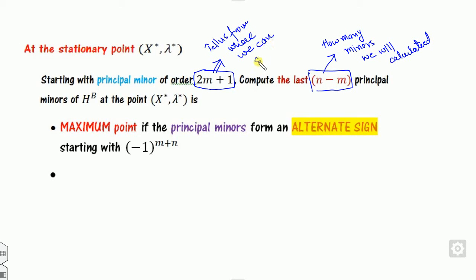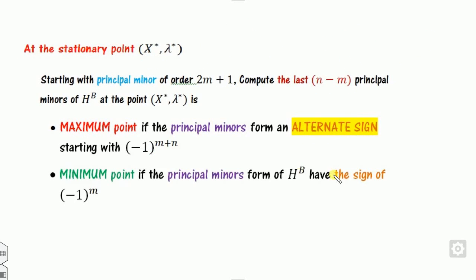N minus M tells us how many principal minors will be calculated, and 2M plus 1 tells us from where to start. Once we compute all the principal minors at the stationary point, we check whether they have alternating signs — if the first sign follows this pattern, it is a maximum; if they all have the same sign as specified, it is a minimum.